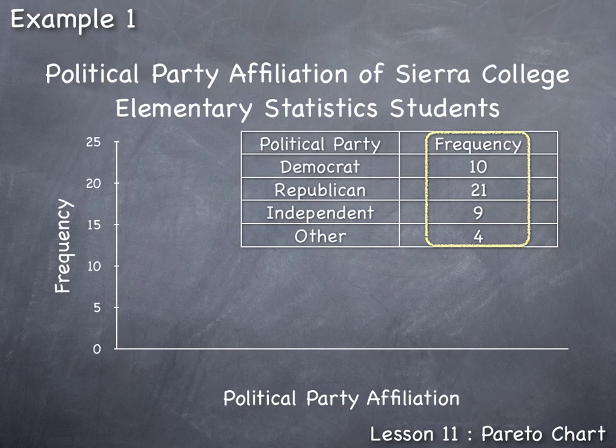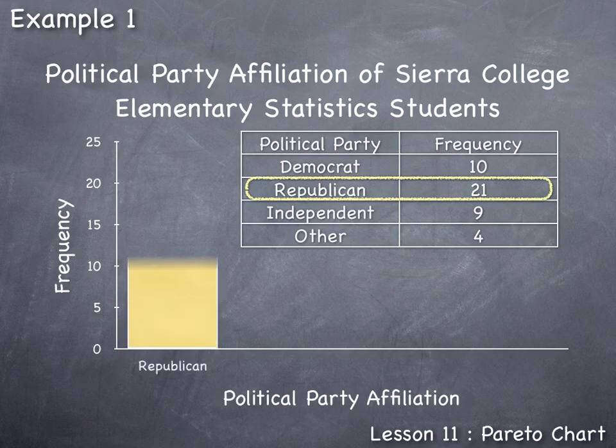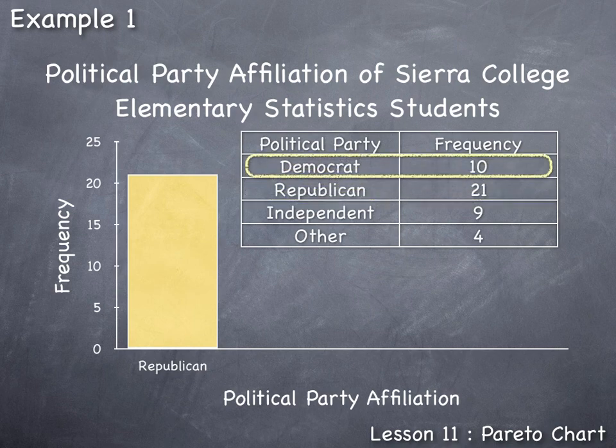Now we can start making the bars. The first bar is based on the highest frequency. Because political party affiliation is qualitative data at the nominal level of measurement, there is no natural order, so the Pareto chart orders bars from highest to lowest frequency. The highest frequency was Republicans — 21 students — so the first bar is labeled Republican and drawn to a height of 21.